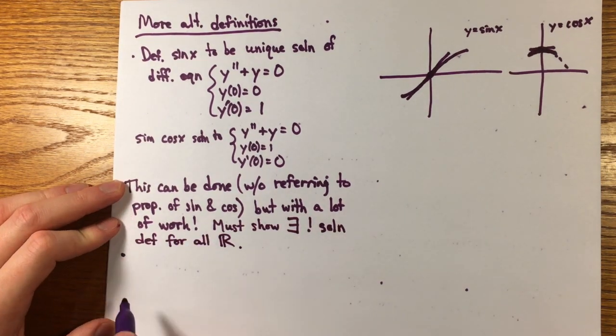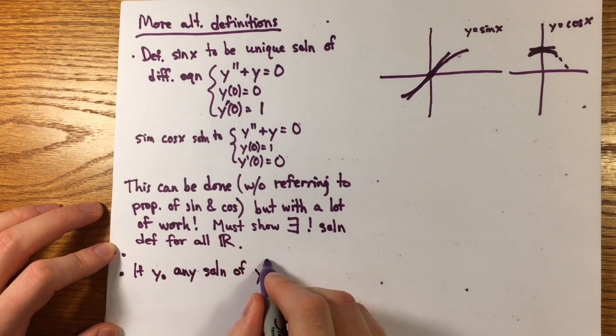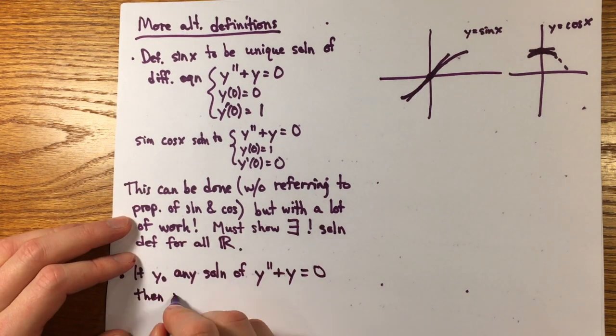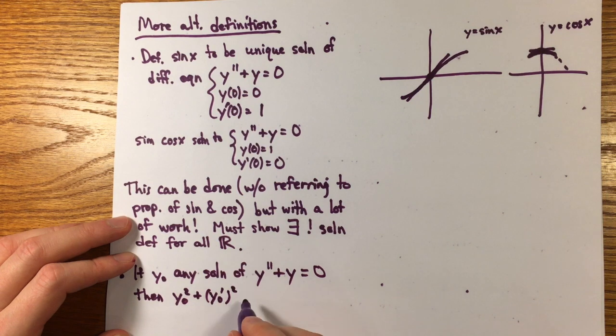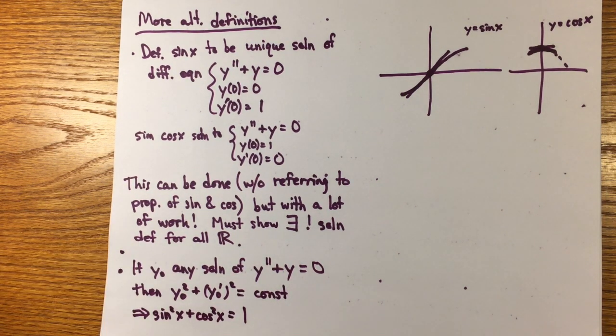The derivatives of sine and cosine are immediate, but the relation sine squared plus cosine squared equals 1 follows from differentiating the expression y squared plus y prime squared for any solution y of this equation, seeing this as constant and checking the initial values.